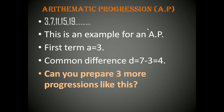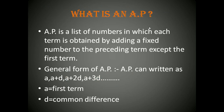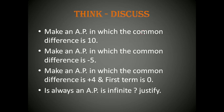You can prepare any number of progressions like this — try and discuss with your friends after this video. The definition of AP: an AP is a list of numbers in which each term is obtained by adding a fixed number to the preceding term, except the first term. The general form of AP is: a, a+d, a+2d, a+3d, and so on, where 'a' is the first term and 'd' is the common difference maintained throughout the series.